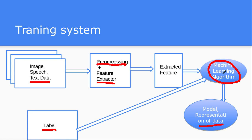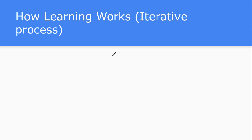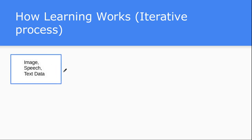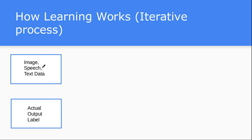The machine learning algorithm is not a simple set of basic building blocks — it's a very iterative process. Let's see how actual learning happens. Given input data and labels, you have image, speech, or text data with actual output labels. For each record — say one cat image with the label 'cat', or a sentence labeled as 'happy' or 'very bad' — you apply this data to the machine learning algorithm.